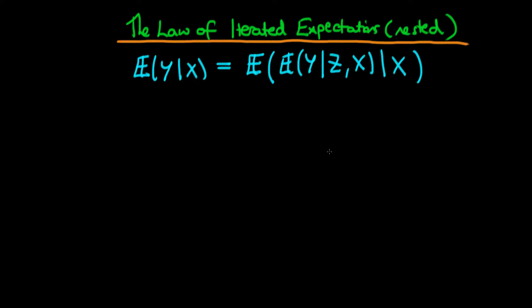In this video, I want to provide an introduction to the law of iterated expectations when it's in its nested form. And by its nested form, I mean it's written like I've already written it here. So mathematically, it means that the expected value of y given x is equal to the expectation of the expected value of y given z and x, when I condition on x.